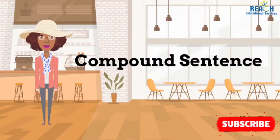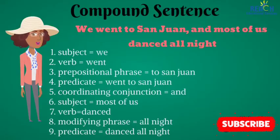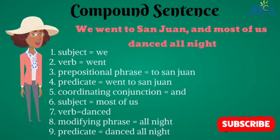The second sentence type is the compound sentence, and our example is: we went to San Juan and most of us danced all night. This sentence has more going on than the simple sentence. We have two subjects — we and most of us — two verbs — went and danced — a modifying phrase: all night, and a prepositional phrase: to San Juan. We have two predicates: went to San Juan and danced all night. Overall, it gives a clear picture that not only did they go somewhere, but they did something as a group.